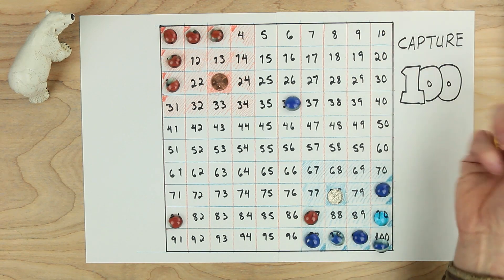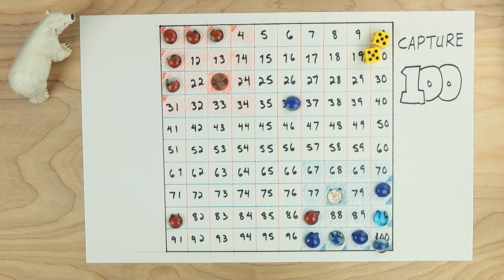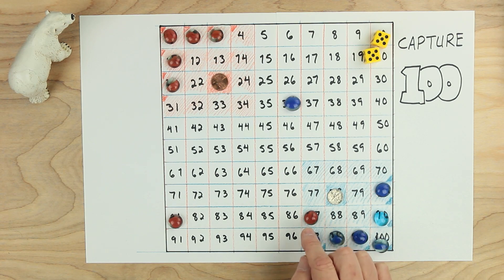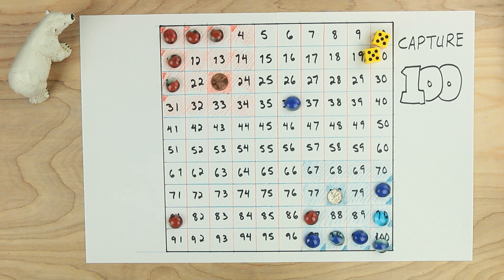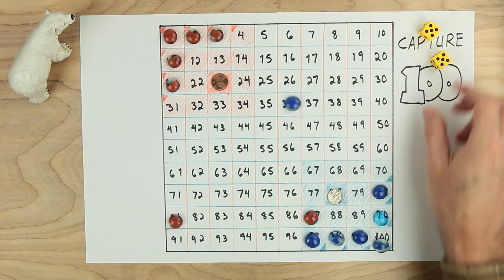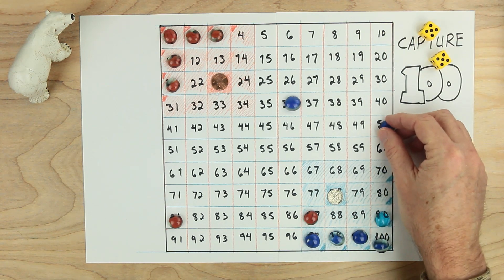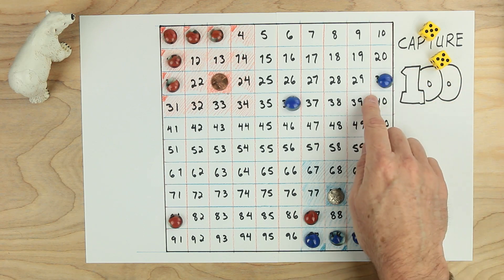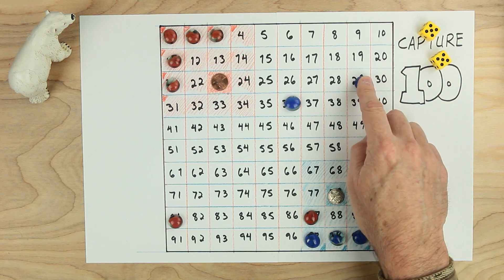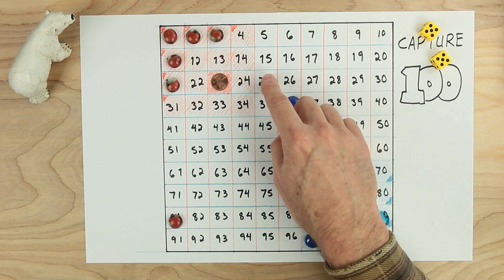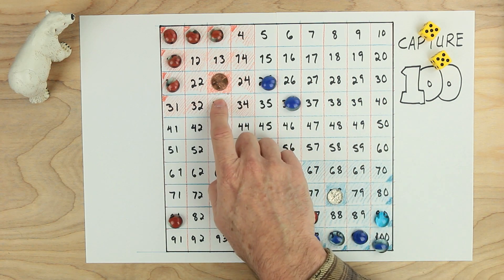It's blue's turn. Blue rolls a five and a five. You can see neither five are going to help to take this red one away right now. What else could blue do? Blue decides to subtract by five tens, minus ten, twenty, thirty, forty, fifty. And then subtract by five ones, one, two, three, four, five. So blue's making a good move here as well.